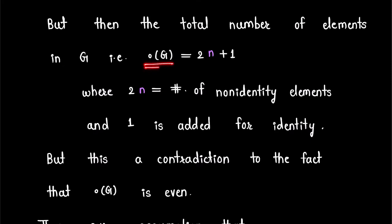...that is, the order of G will be equal to 2n + 1. Here 2n is the total number of non-identity elements, since there are n mutually disjoint subsets each containing 2 elements, and 1 is added for the identity element.